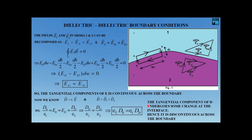This equation tells us that the tangential component of the vector D is not continuous across the boundary — it undergoes a change due to the epsilon-1 and epsilon-2 factors. So D1t does not equal D2t; the tangential component of D is discontinuous.